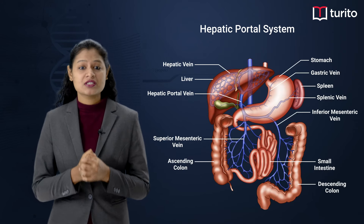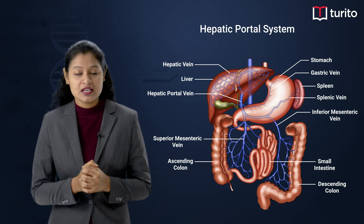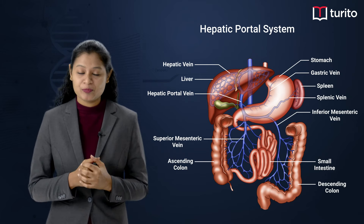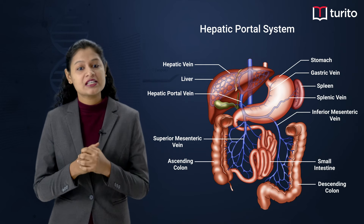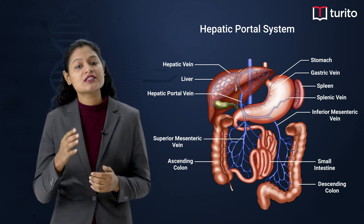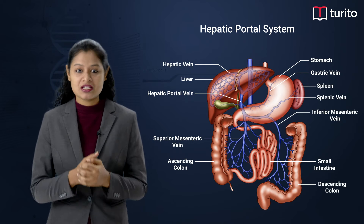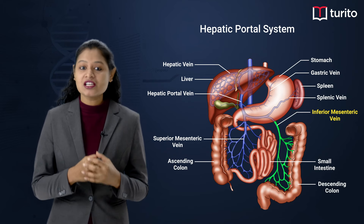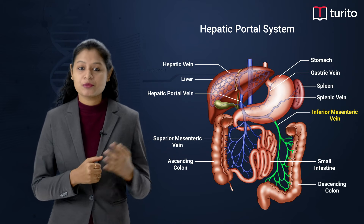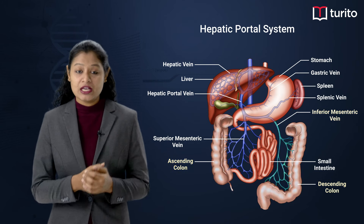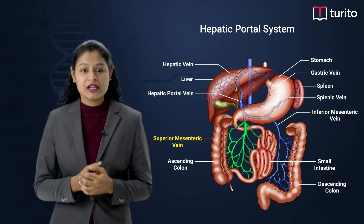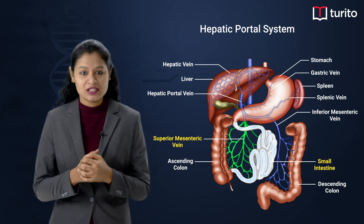The hepatic portal system consists of veins including the hepatic portal vein. This is formed by the connection of the inferior mesenteric vein and the superior mesenteric vein. The inferior mesenteric vein collects blood from the colon and rectum, while the superior mesenteric vein collects blood from the small intestine.